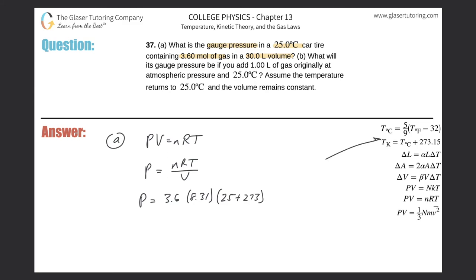Following the formula, we divide by the volume. Since we're using R = 8.31, the volume must be in cubic meters, so take the 30 liters and divide by 1000. So the calculation is: 3.6 × 8.31 × (25 + 273), divided by (30 ÷ 1000). We get a value of about 2.97 × 10⁵ pascals.